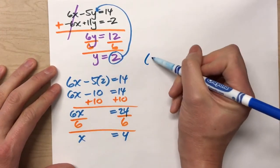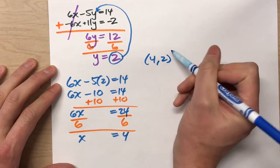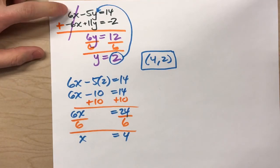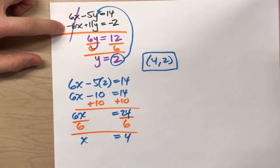So, my solution is x is 4, y is 2. Now, here's the thing to point out, though. This method of addition only works because they have the same number of x's, but one's positive and one's negative.